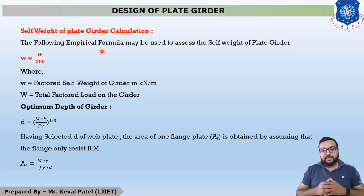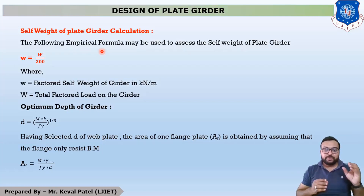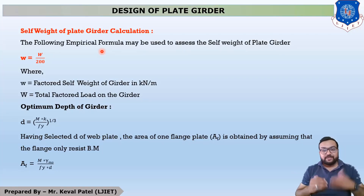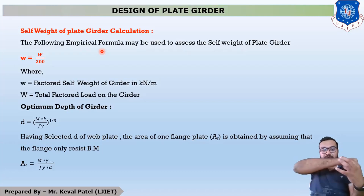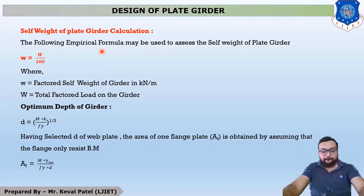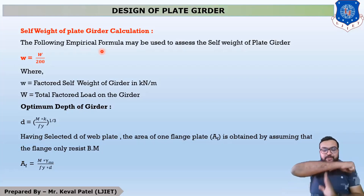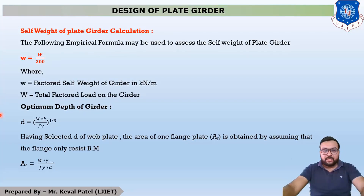After finding the shear force and bending moment, using the maximum shear force and maximum bending moment, we first choose trial-and-error sections. These trial sections have three components: the top horizontal plate (top flange), the vertical plate (web), and the bottom horizontal plate (bottom flange).